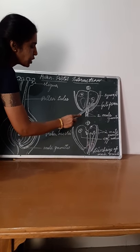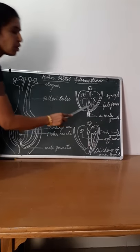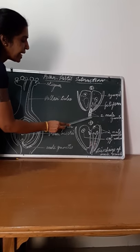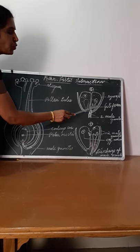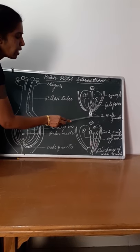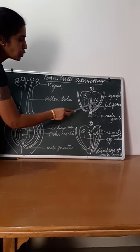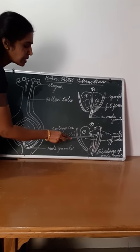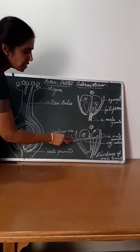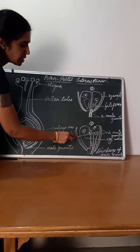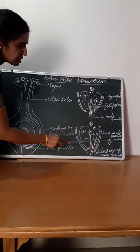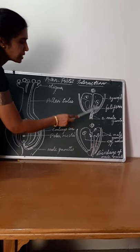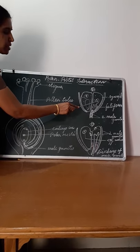The finger-like projections you can see here are filiform appendages. These filiform appendages direct the pollen tube to release the male gametes. The pollen tube releases two male gametes, which are released into the synergid cytoplasm. This is the synergid, and the nearby cell is the egg cell.